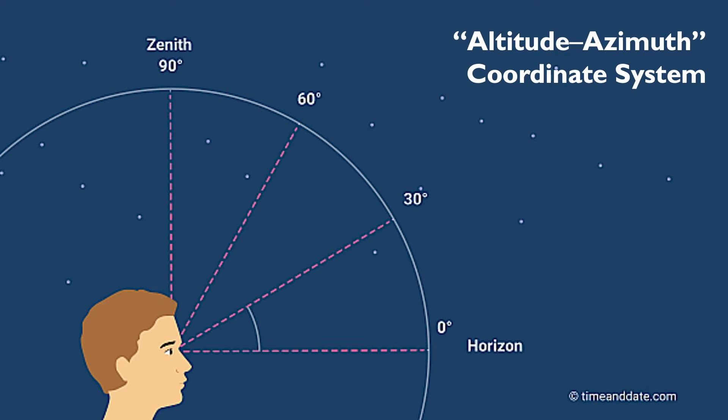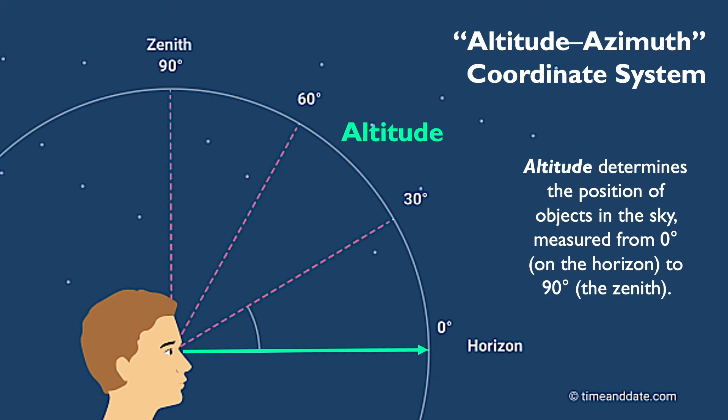In the horizontal coordinate system, also sometimes called the Alt-Az or Altitude Azimuth system because of the names of its coordinates, you are the center. The horizontal coordinate, or the Altitude, starts at 0 degrees on the horizon, directly in front of you, going upwards to the zenith, or the point directly overhead, where the Altitude is 90 degrees.